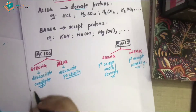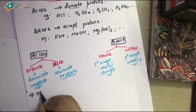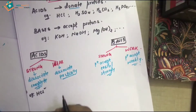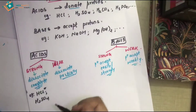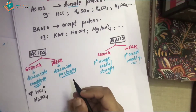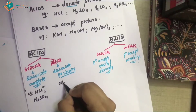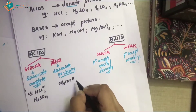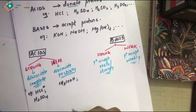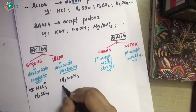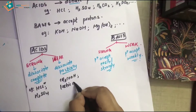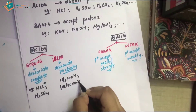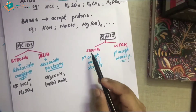Examples of strong acids include hydrochloric acid and sulfuric acid, among many others. Examples of weak acids include acetic acid and lactic acid, with many more examples as well.